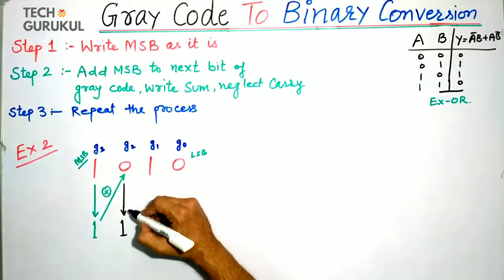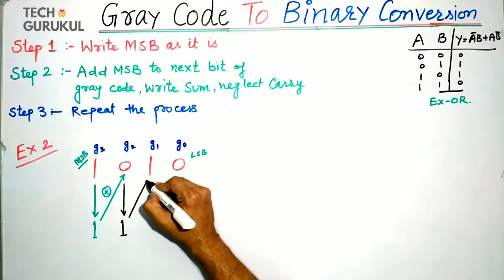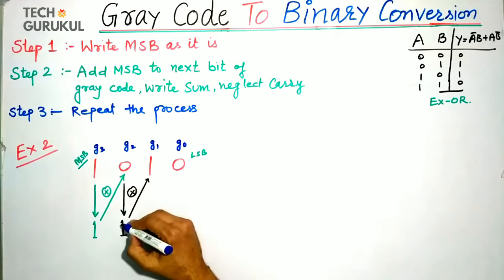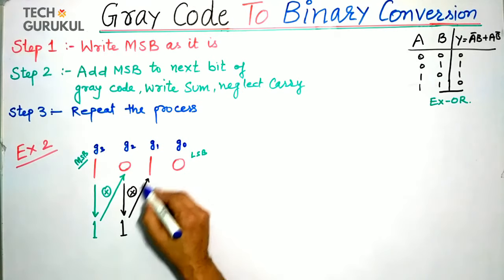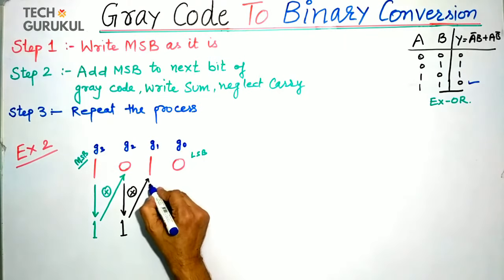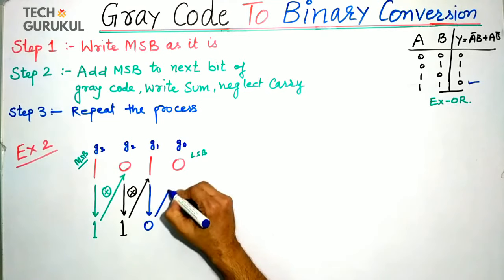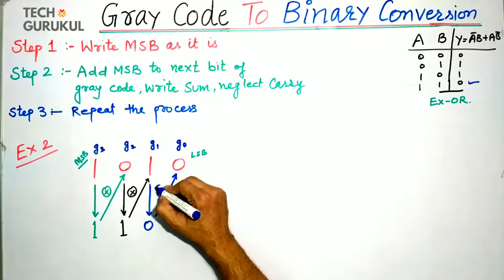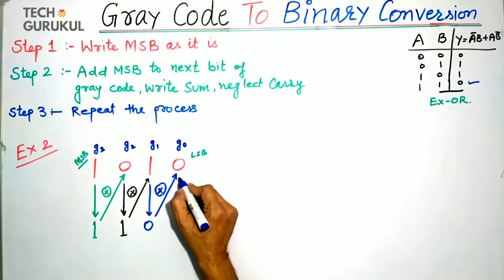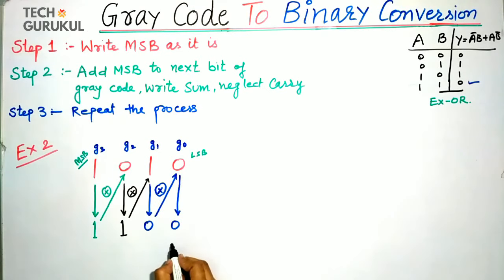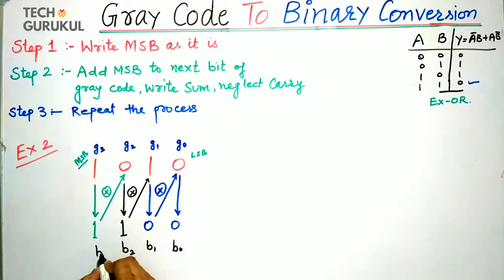Similarly, we perform XOR between the previous binary bit (1) and G2 (1): input is 1, 1 and the output is 0. Then XOR between the previous binary bit (0) and G3 (0): output is 0. The resulting binary bits are B0, B1, B2, B3.